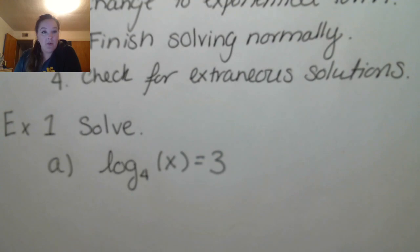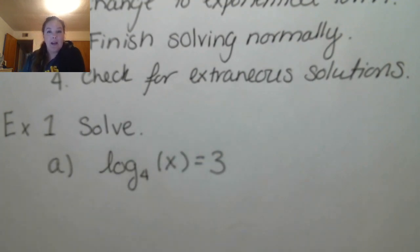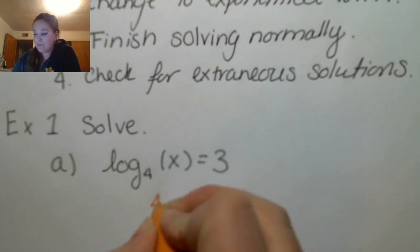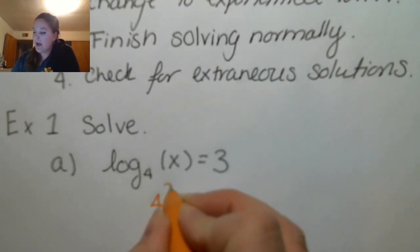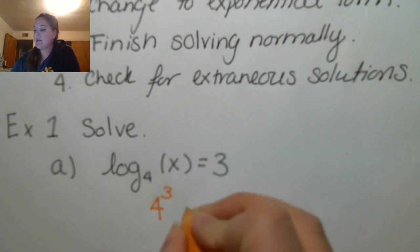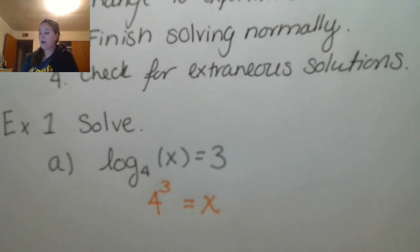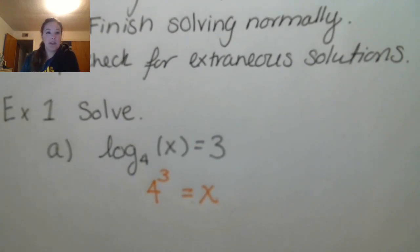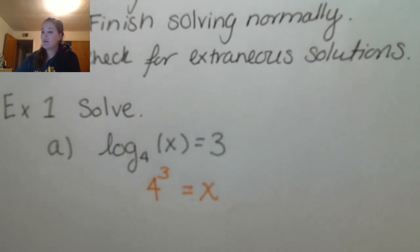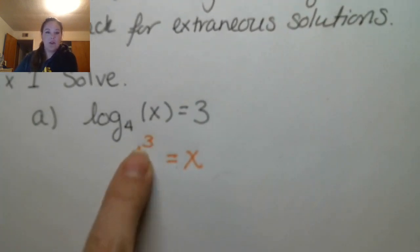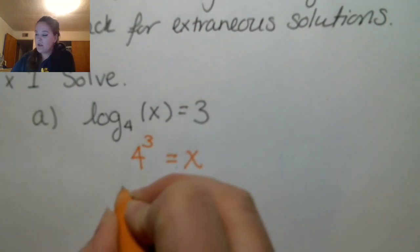So the log is already isolated, so we're going to go ahead and change to exponential form. Remember, the base of the log becomes the base of the exponent. The answer is my exponent, and then this is the other side of my equation. Now the only step that we need to take to finish solving this is just to say what 4 cubed is — so that's 64.